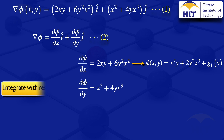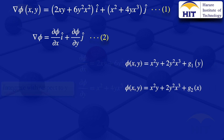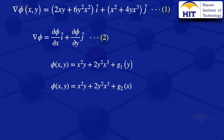Then I integrate the second equation with respect to y, giving us φ(x, y) = x²y + 2y²x³ + g₂(x). The g₂(x) is the constant of integration, and it is a function of x only, because it came from a partial derivative with respect to y.